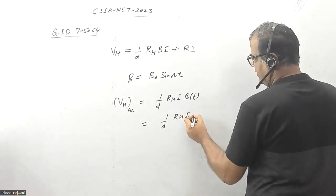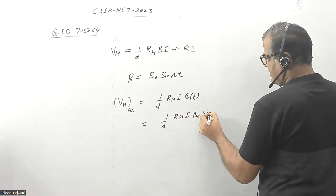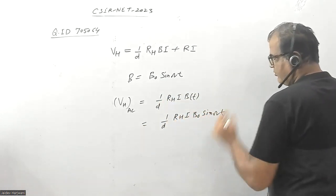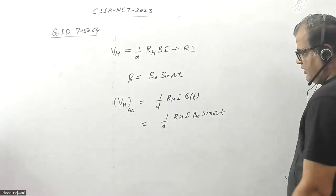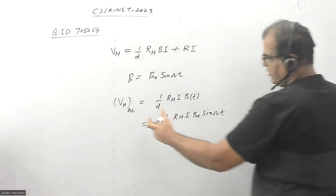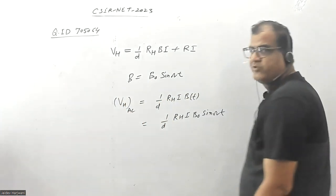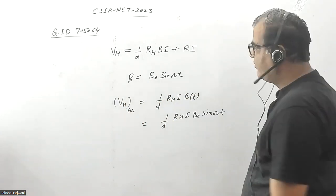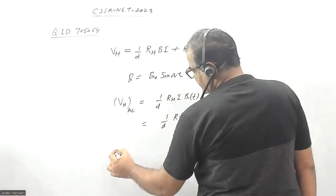When you measure the Hall voltage, you measure the RMS value. The measured value will be the RMS value.